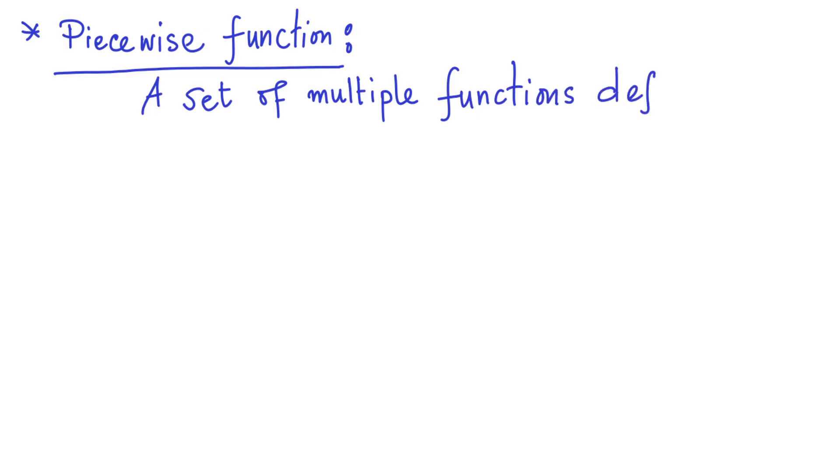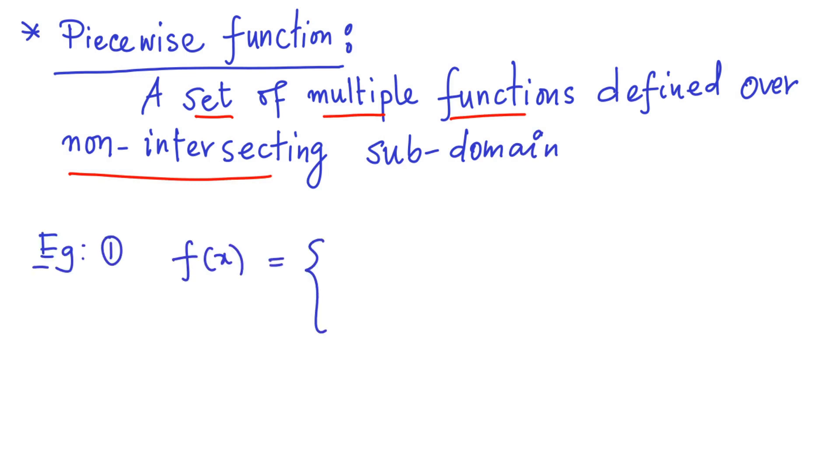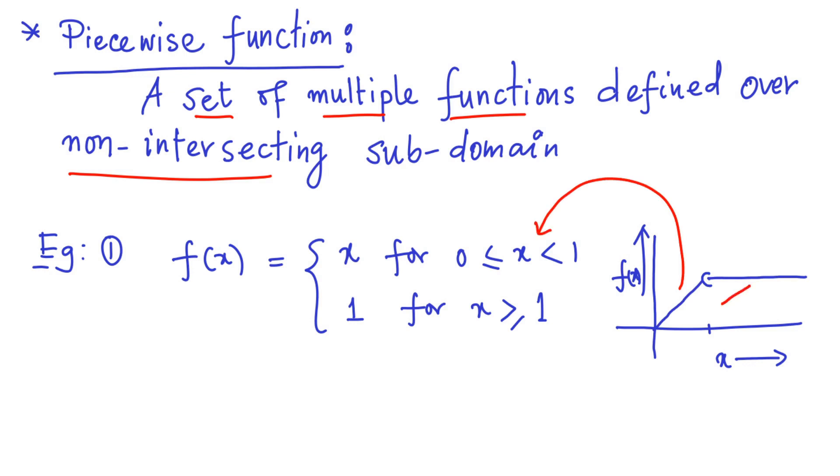Now, we are ready to define more complicated functions. So here, we define the so-called piecewise function. A piecewise function is a set of multiple functions defined over non-intersecting subdomains. So let me consider an example function. Let's say F of X equal to X for X being between 0 and 1, and 1 if X is greater than or equal to 1. So you can see, this is basically a set of two functions, each function having its own domain. And the domains are non-intersecting. And you can see the graph that which part of the function belongs to which domain.